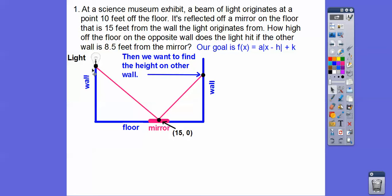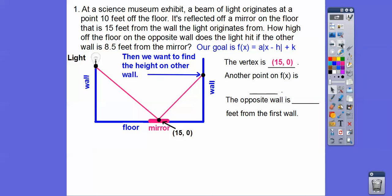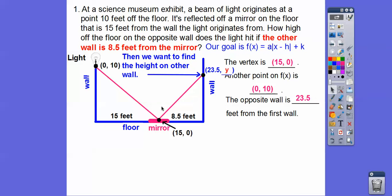So this is going to be 0,10 right here because it's 10 feet off the floor. This is going to be 15,0, makes it nice and easy for our vertex right there. And we want to know the height of this other wall right there. So the vertex is that 15,0. And then another point on f of x is that 0,10 right here. So we're going to use that point to get our equation. And the opposite wall, how far is from the first wall? Remember, this is 15 feet and then they tell us that it's 8.5 feet. So if we add those together, we get 23 feet. So this ordered pair is 23.5 comma y. And this is what we're looking for. We're looking for this y, this height of the other wall right there.